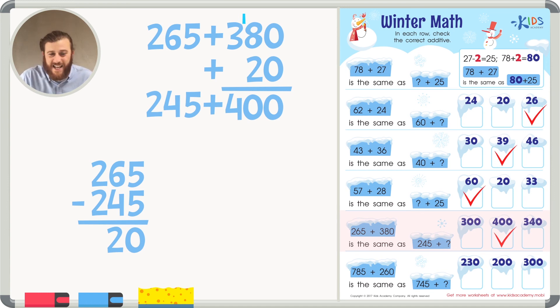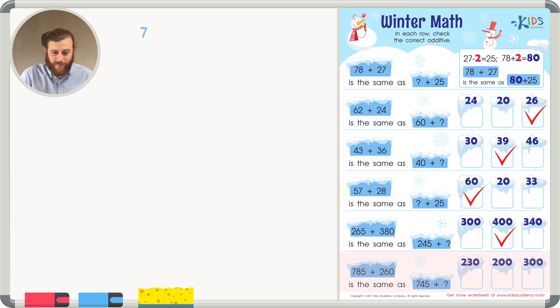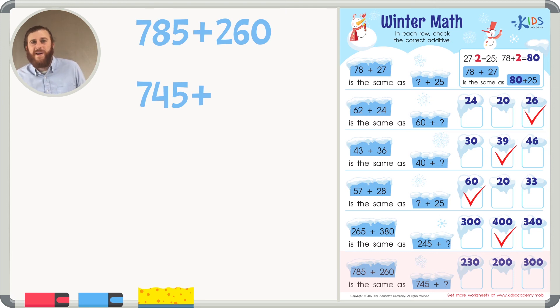Finally, our last example. Another 3-digit by 3-digit problem. 785 plus 260 is the same as 745 plus blank. Again, how much more? Again, what's more? 785 or 745? Well, 785 is more. But how much more? We could subtract these two numbers right here to see how much more.